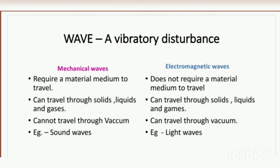An example of electromagnetic waves is light waves. Light waves can travel through solids like a piece of glass, through liquids like water, through air which is a gas, and they can even travel through vacuum. That is why light reaches us from such a far distance from the sun, because in space there is vacuum.